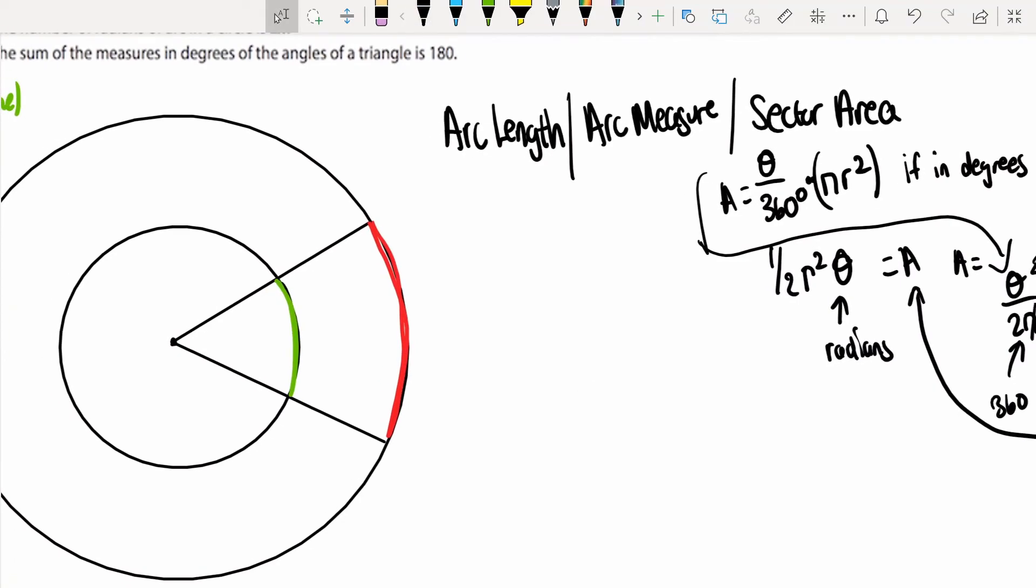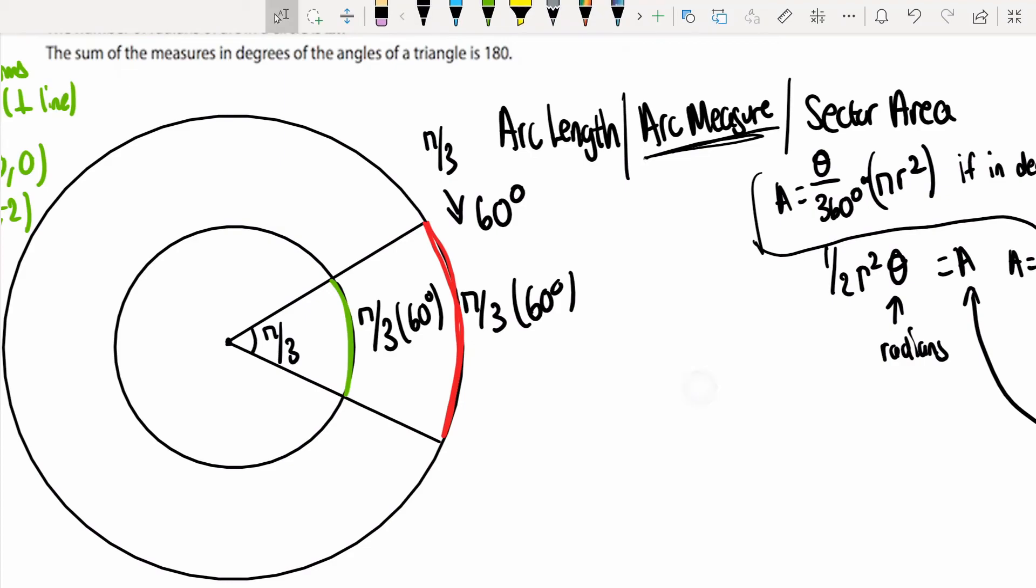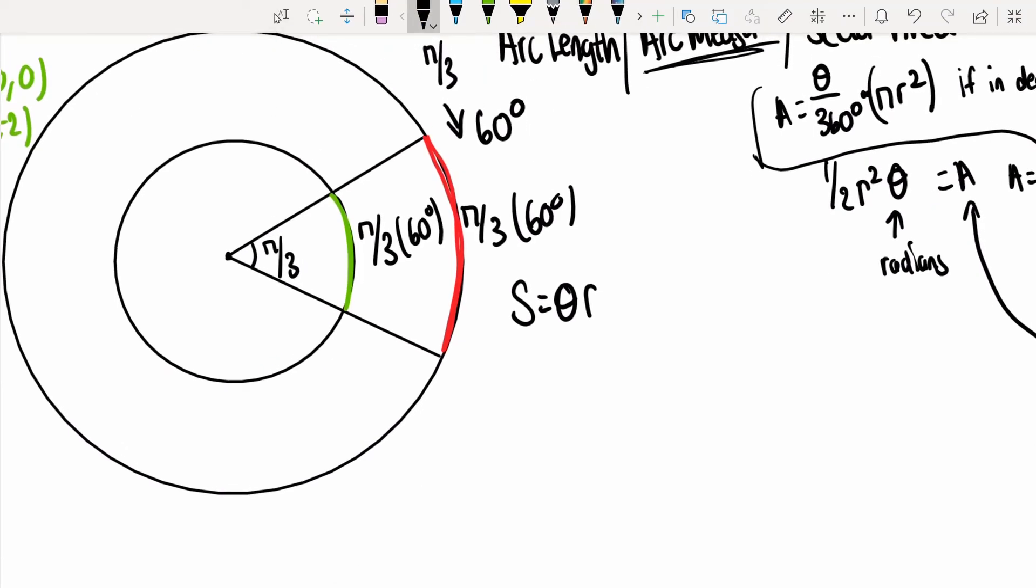Lastly, what we have left is arc measure and arc length. Arc measure is just going to be the same as the central angle. So if this had a central angle of π/3, which is equivalent to 60 degrees, then these would have π/3, 60 degrees. Despite the red arc of the larger circle being clearly larger than the smaller circle, they're just going to have the same arc measure. However, the arc length is what's going to be actually the difference between these two. How we measure arc length is going to be s equals θr. That's how I remember it. The arc length is determined by the θ in radians times the radius.